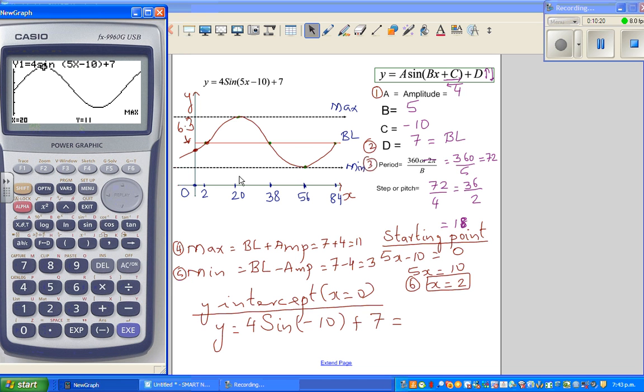So then again, g-sol, and you find maximum. So maximum is at 20, 11. And g-sol minimum should be at 56. Minimum is at 56.3. So it's perfect. See you in the next video.